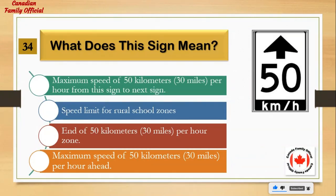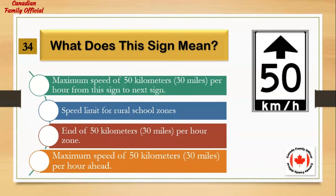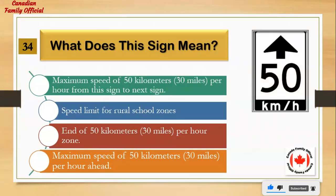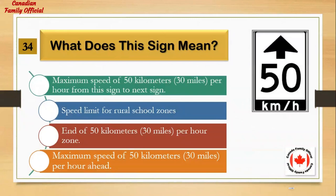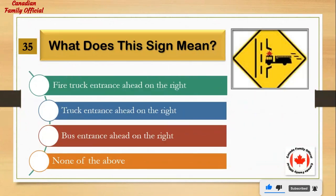What does this sign mean? Number 1: maximum speed of 50 kilometers (30 miles) per hour from this sign to next sign. Number 2: speed limit for rural school zones. Number 3: end of 50 kilometers (30 miles) per hour zone. Number 4: maximum speed of 50 kilometers (30 miles) per hour ahead. And the answer is: maximum speed of 50 kilometers (30 miles) per hour ahead.